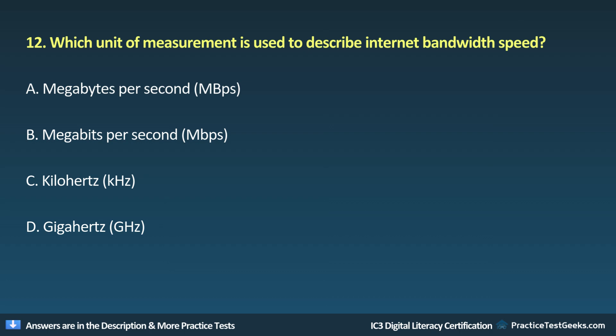Question 12: Which unit of measurement is used to describe internet bandwidth speed? A. Megabytes per second. B. Mbps (Megabits per second).